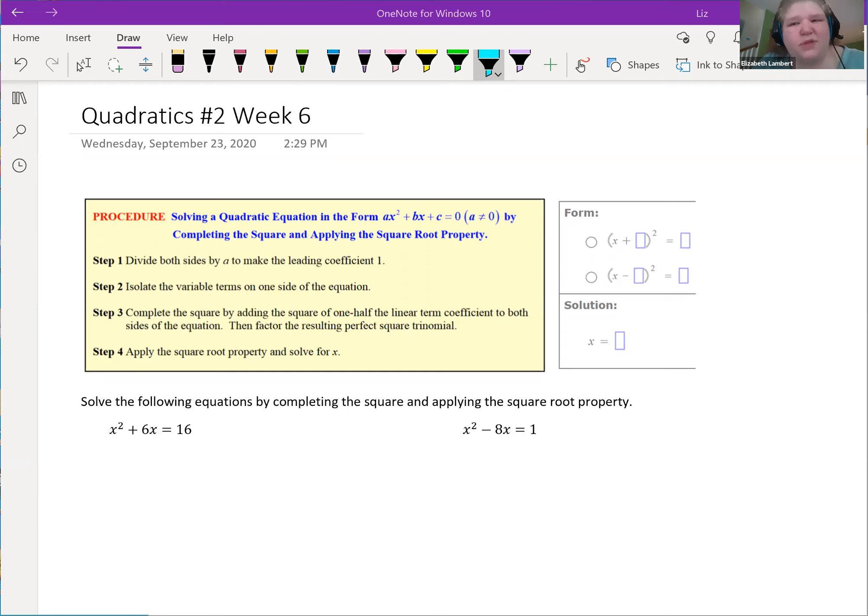All right, so first thing here over on the side, this little box I pulled from Alex. So when you're solving one of these with completing the square, it actually asks for two things. One of them is in the squared format before you would square root both sides. And then it has a choice of, do you want it with the plus or with the minus?